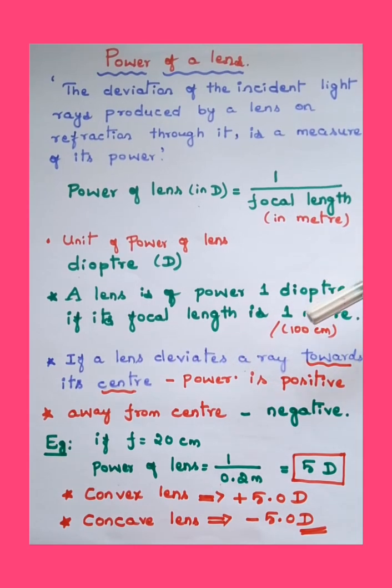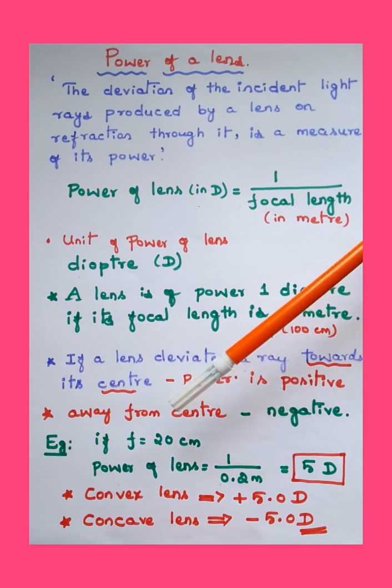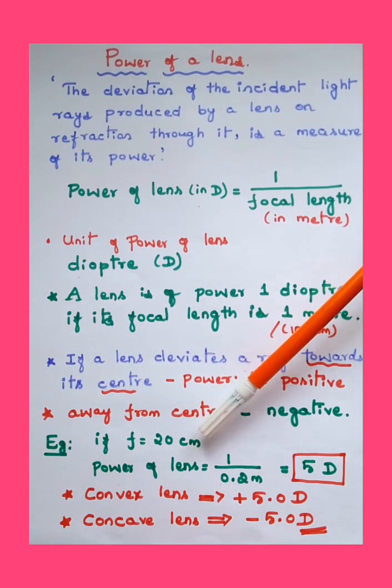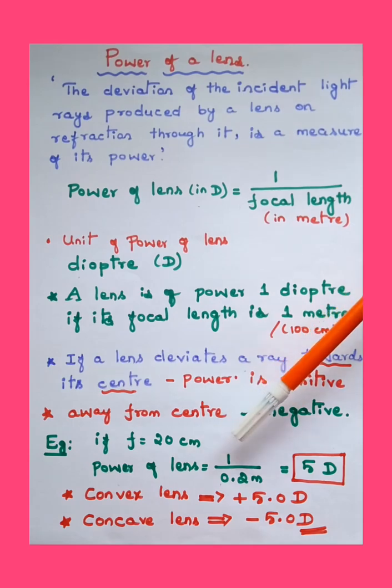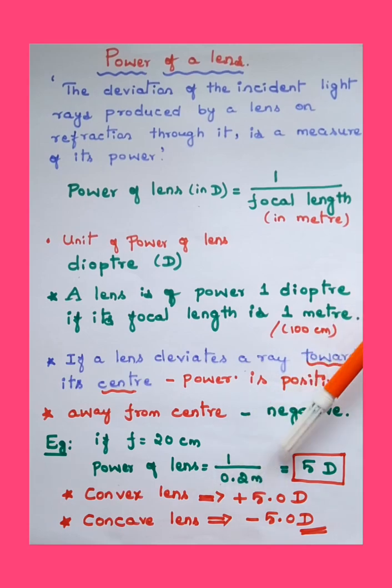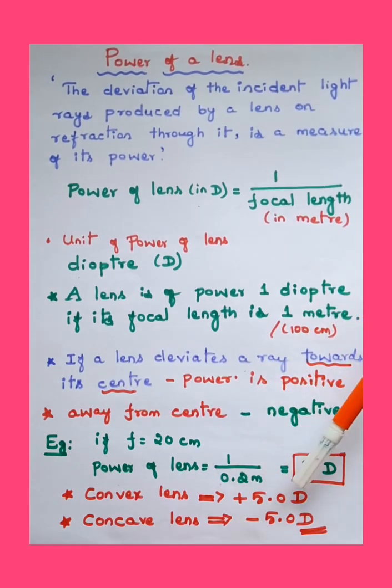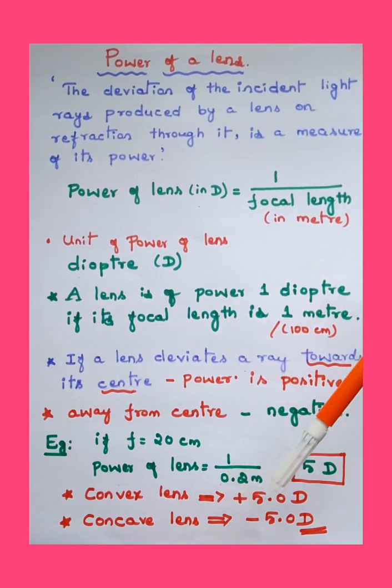For example, if focal length is given as 20 centimeters, if we need to calculate the power of a lens, we substitute as 1 by 0.2 meter, and therefore we can write that this power is 5 diopter. The conversion is shown here. Therefore the power of a convex lens we write as plus 5D, and power of a concave lens in this case is minus 5.0D.